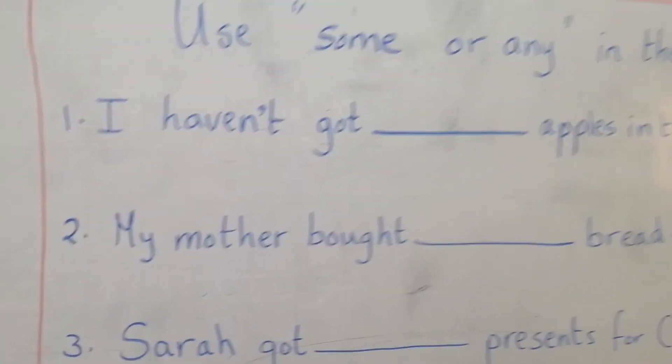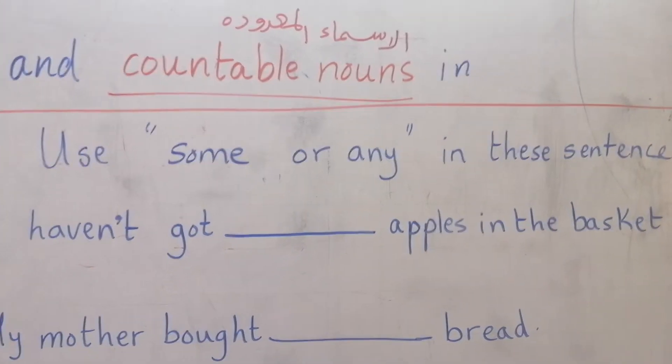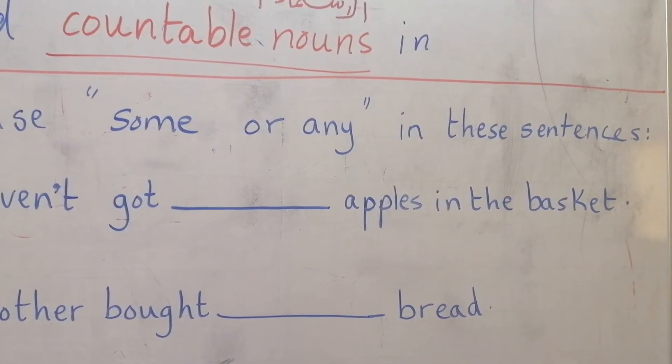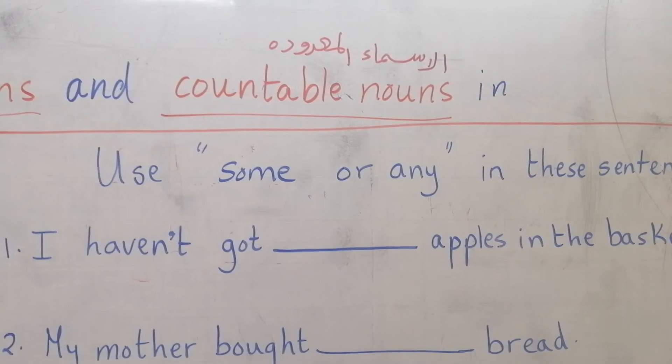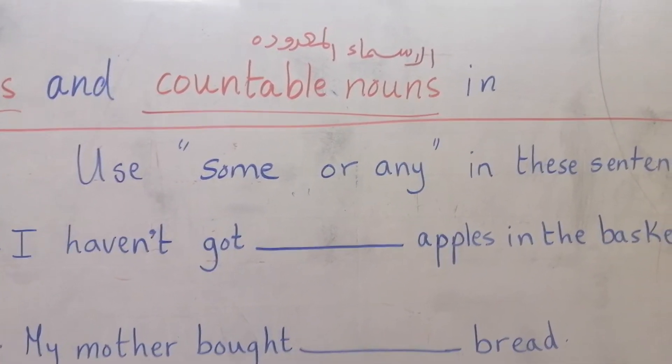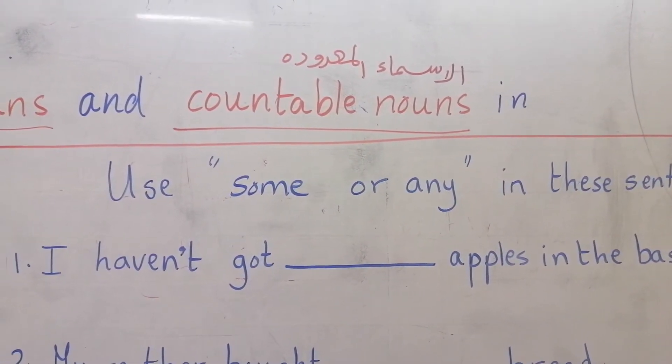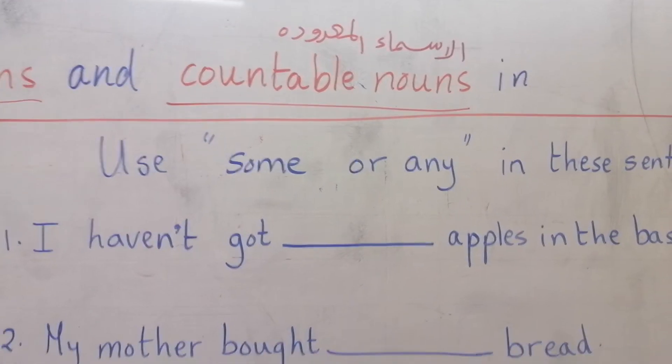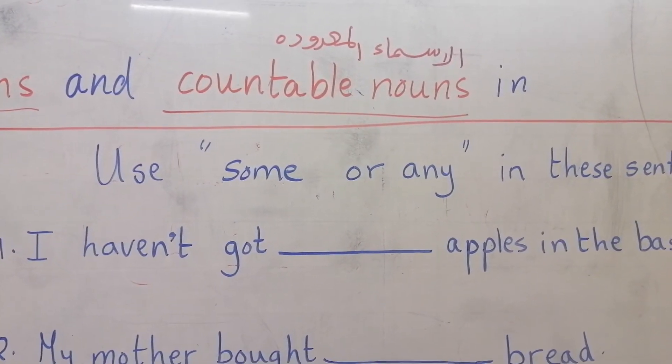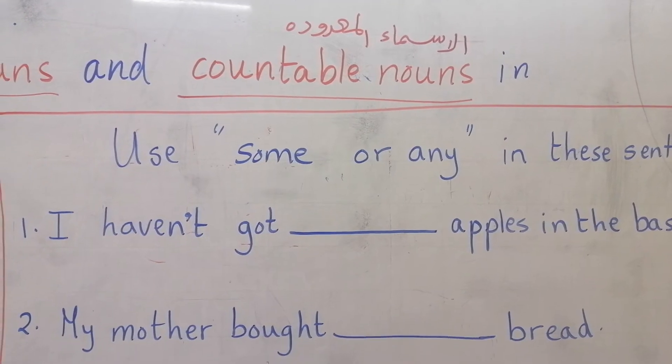Look at these examples. Use some or any in these sentences. First, I haven't got apples in the basket. Haven't got here is a negative sentence, so we have to use any.